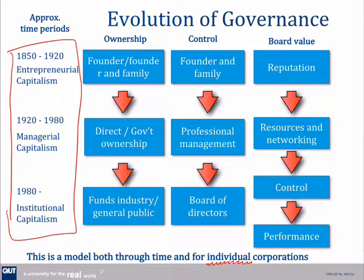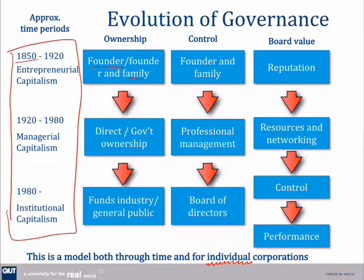Prior to the 1850s, we didn't actually have corporations. We had sole traders, partnerships, and very rare corporations under royal charter, but most business entities weren't a corporation. Then with the Joint Stock Companies Acts — which you'll remember from your business law — corporations were set up by a founder or their family. At the time, they both owned and controlled the corporation. If there were directors on a board, it was often for their reputation, to add lustre to the board and the corporation.